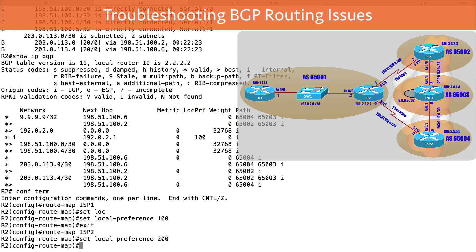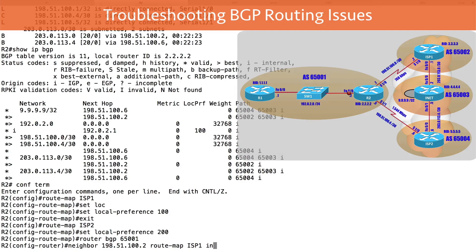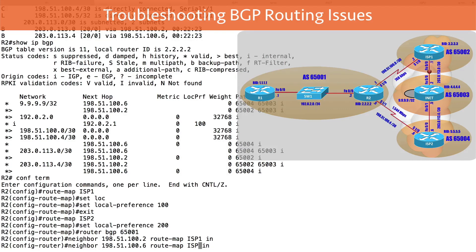To make the route maps take effect, we apply them in BGP router configuration mode using neighbor statements. For autonomous system 65001, we give 'neighbor 198.51.100.2 route-map ISP1 in' — applying the ISP1 route map inbound, assigning those routes a local preference of 100. Similarly, for ISP2's neighbor IP address, we apply the ISP2 route map inbound, which assigns a local preference of 200.